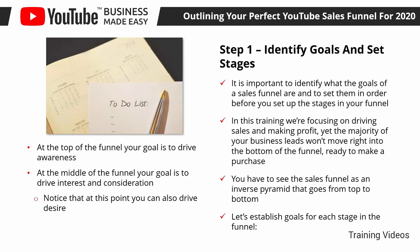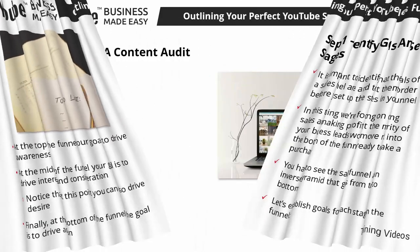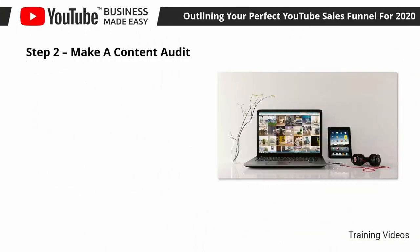Yet there is an objection stopping the lead from taking action, such as price, or they need to learn more about the product before purchasing. Finally, at the bottom of the funnel, the goal is to drive action — this is when a lead is ready to convert by signing up for a trial or making a purchase.